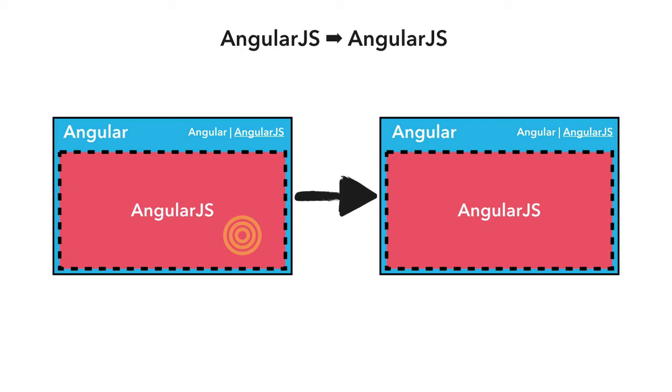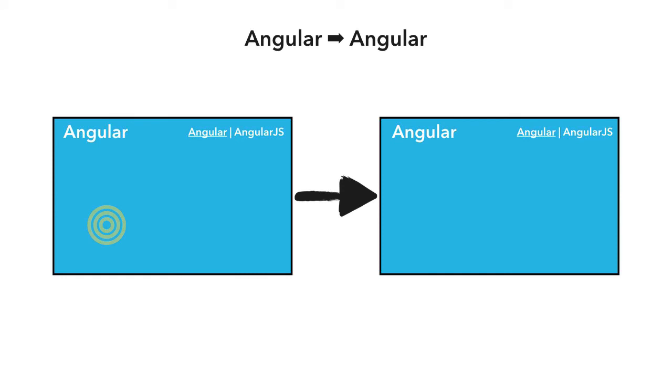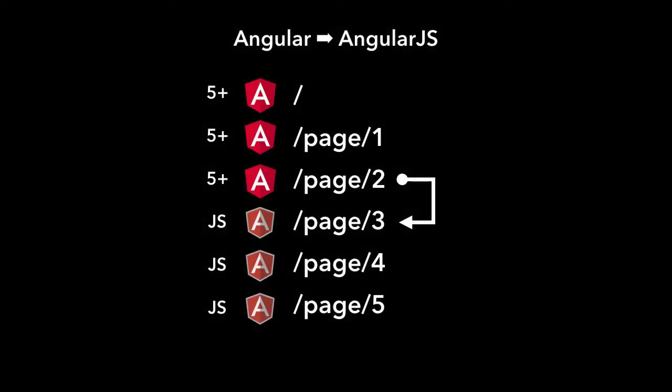Similarly, clicking from one Angular page to another Angular page just works within the Angular application — nothing special needed. The real challenges arise when you click a link in an Angular page that hasn't been migrated yet — it's still handled by the AngularJS application. Or conversely, when something in the iframe needs to trigger navigation in the host Angular application. How do we deal with that?